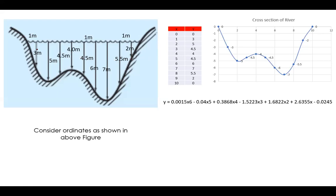These are the assumed coordinates — y-values of 3, 5, 4.5 and so on for the river cross-section. The total top width is ten meters and the maximum depth is seven meters. I've used an Excel program and plotted the profile of the river. Now I'll show you how to obtain the equation using Excel, in a simple and quick way.